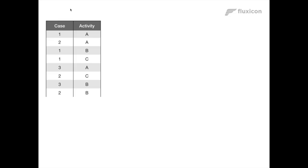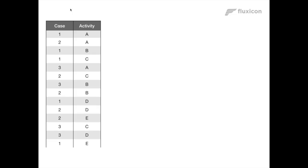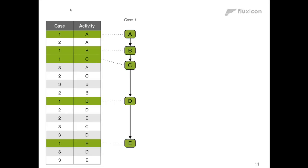How does it work? A simple example: activities are performed for different cases and recorded as data in an information system — an ERP system, a workflow system, or a website that customers visit. This data is the starting point for process mining. Inside the tool, we reconstruct the different flows that were performed. For example, in an ordering process, a customer goes through steps A, B, C, D, E — order product, pay, ship product, and so on.